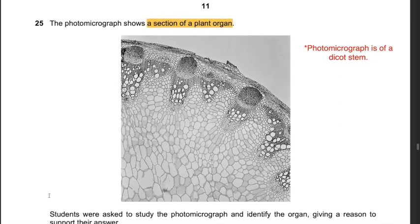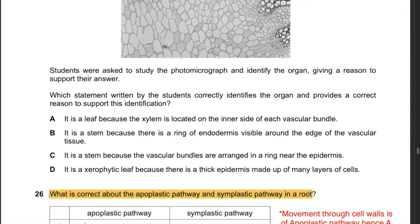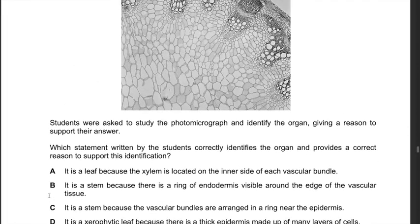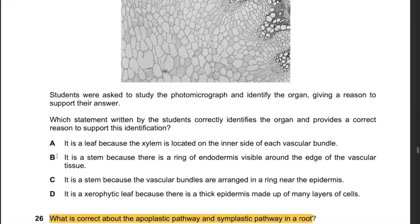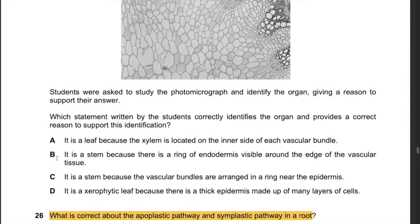Question 25: The photomicrograph shows a section of a plant organ. This is a dicot stem. Answer A: it is a leaf - incorrect. Answer B: it is a stem because there is a ring of endodermis visible - incorrect, no endodermis is visible in this photomicrograph. Answer C: it is a stem because the vascular bundles are arranged in a ring near the epidermis - yes, correct. The photomicrograph shows bundles arranged in a ring towards the outer region. Answer D: it is a xerophytic leaf - incorrect, it is a stem. Hence the answer is C.